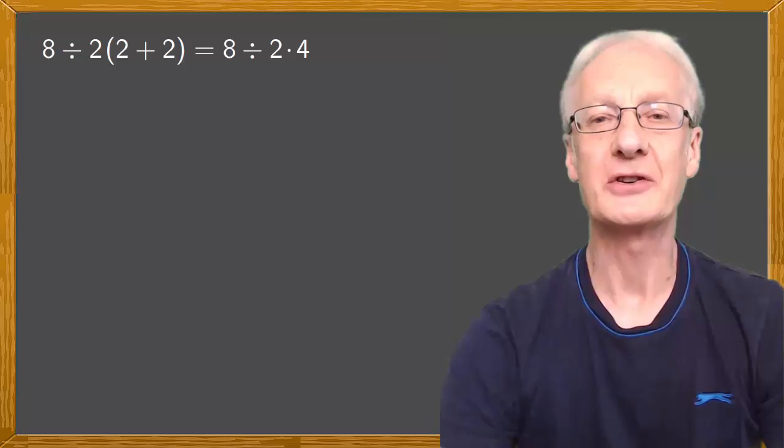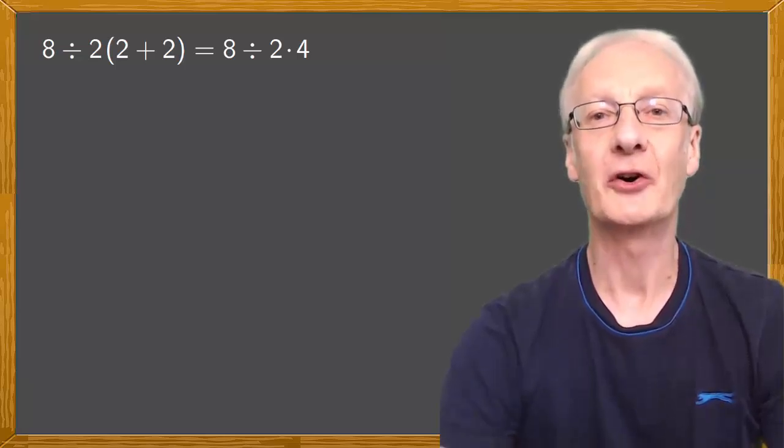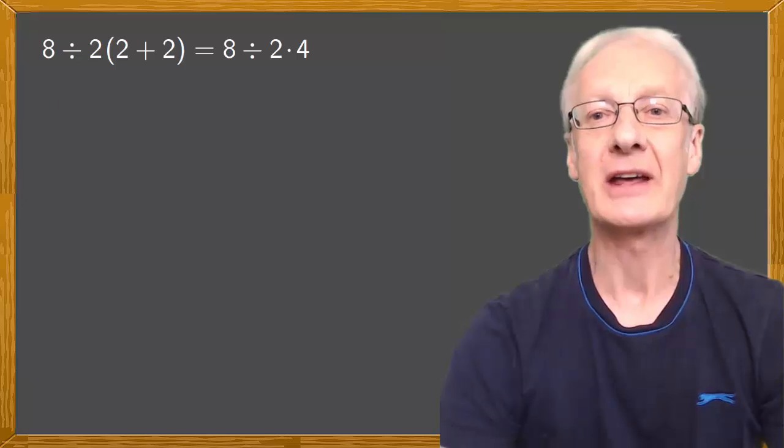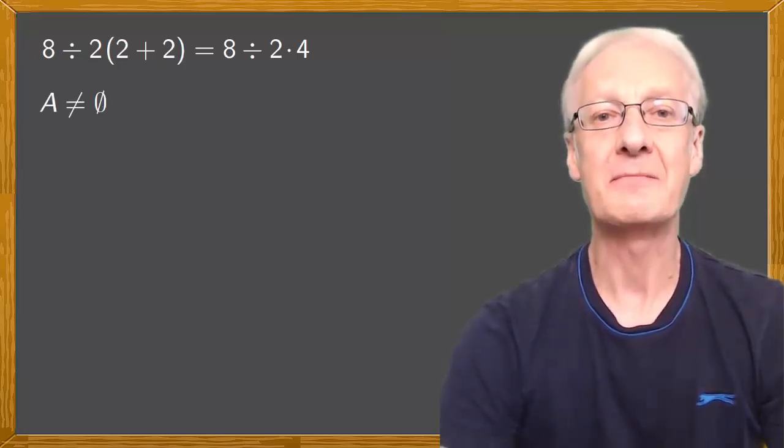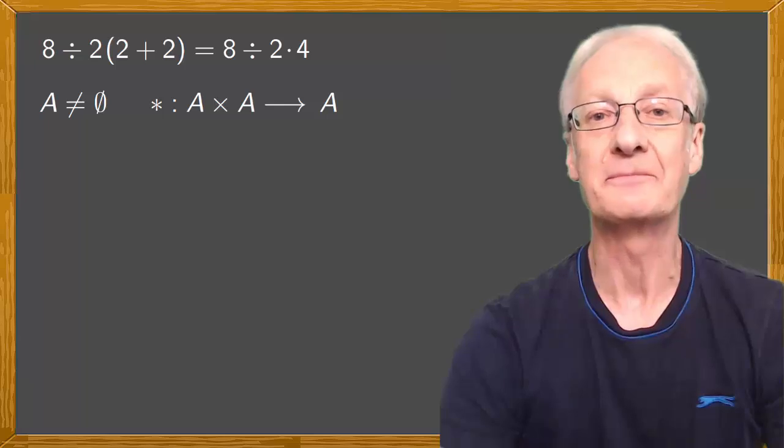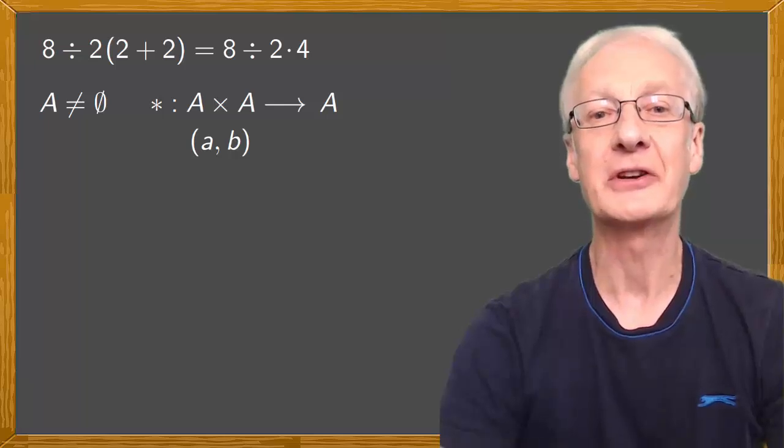First, for an operation, or more precisely a binary operation, we need a non-empty set, in other words elements on which we can operate. Let's call the set we're talking about A. Then an operation in A is a map which sends elements of the Cartesian product of A and A to A. Each pair of elements AB, when operated upon, results in a new element.